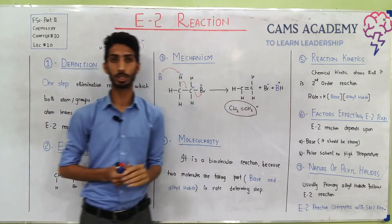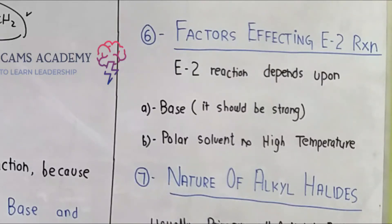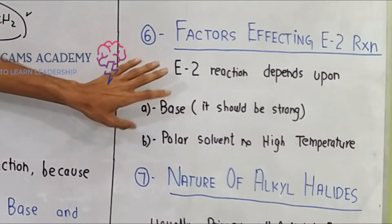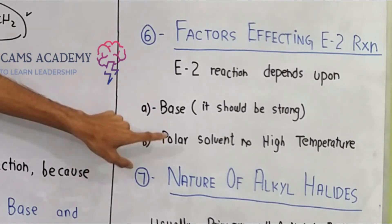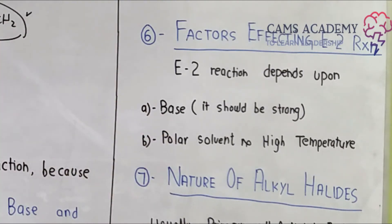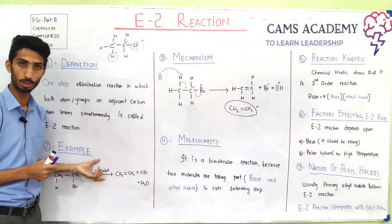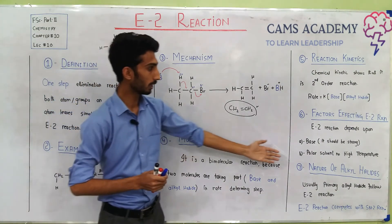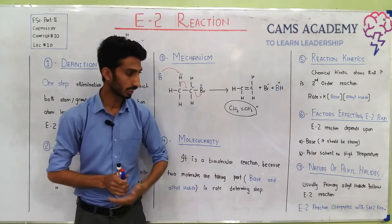Now the factors that affect E2 reactions: mainly two factors. First, the base must be very strong. Second, polar solvents and high temperature are needed — solvents like alcohols are polar solvents, and high temperature favors E2 reactions.